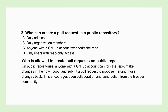Let's talk about actually contributing to a project. If you're looking at a public repository — maybe an open source project — who actually has the power to create a pull request? The answer is anyone with a GitHub account who forks the repository. Forking means you create your own personal copy of that public repository under your GitHub account, like your own sandbox. You make changes safely in your fork, and then you propose those changes back to the original project using a pull request. It's a powerful way to invite contributions from literally anyone, while maintainers still control the main codebase.